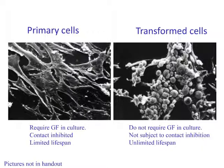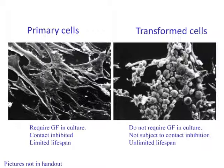Transformed cells, on the other hand, are cells that were isolated from cancerous tissue or from primary cells that have been manipulated genetically to lack cell cycle regulatory functions. Transformed cells do not require extensive growth factor supplementation and they can grow and divide indefinitely. They also lack contact inhibition — they will not stop growing when packed tightly next to one another, and as shown in this picture, they will grow on top of one another again and again.